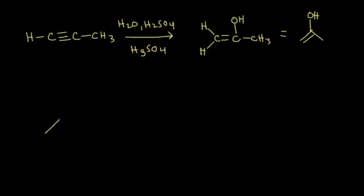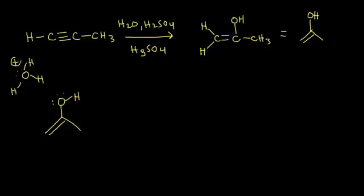Let's redraw our enol with the double bond and lone pairs of electrons. This enol is present in an acidic mixture — H₂O and H₂SO₄ give us hydronium ions (H₃O⁺) in solution. The hydronium ion is capable of donating a proton. The pi electrons are going to move and pick up a proton, while these electrons kick off onto the oxygen. This is an acid-base reaction as the first step.